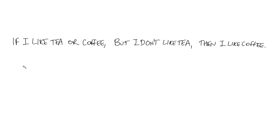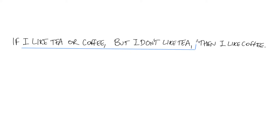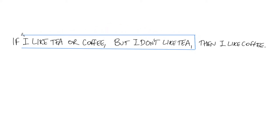The first thing I'm going to do to represent this as a formula is identify its structure, and the main structure is this if-then. So there's a relationship between two parts of this sentence, which I'll draw a box around. This is the first part — that's the condition for my if-then — and the consequence of that condition is: I like coffee.